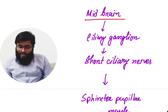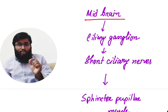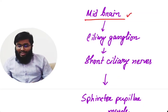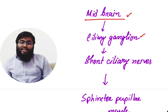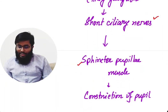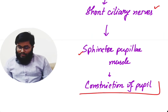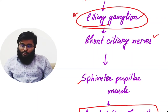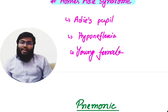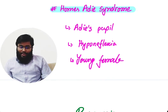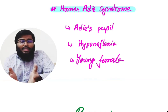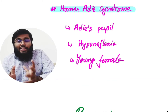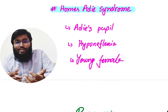There is no damage in the midbrain. The light reflex process starts from the midbrain, then goes to the ciliary ganglion, then via short ciliary nerves to the sphincter pupillae muscle causing constriction of the pupil. The problem is specifically in the ciliary ganglion.